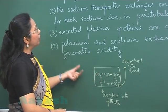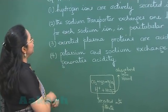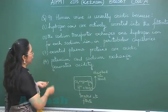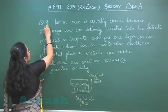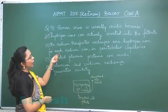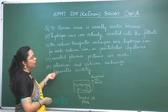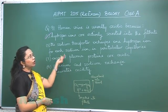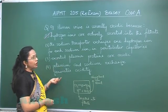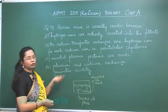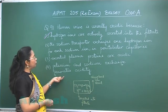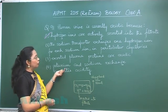So for every hydrogen ion secreted, there is a bicarbonate absorbed, and the blood remains alkaline. Looking at the choices, the first choice — hydrogen ions are actively secreted into the filtrate — is the correct answer. The sodium-hydrogen exchanger in the peritubular capillaries does not affect urine acidity, and plasma proteins are not excreted.